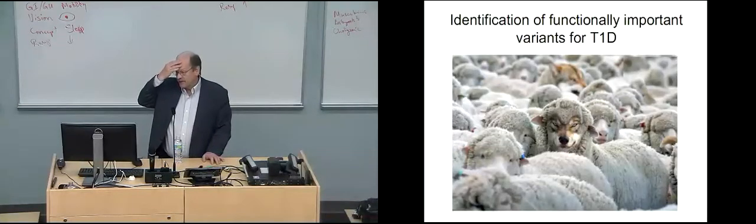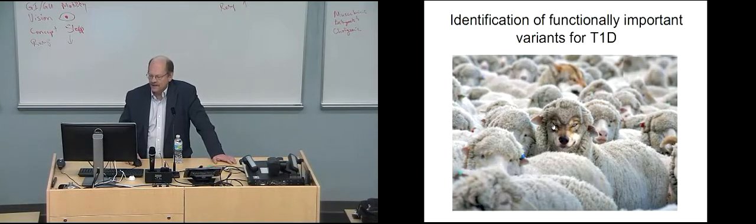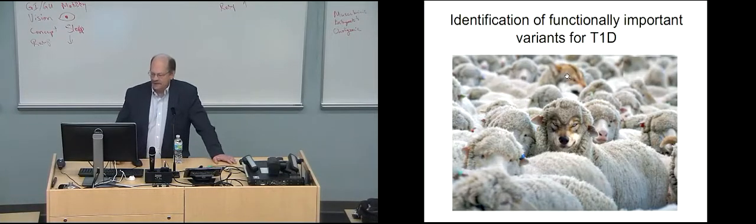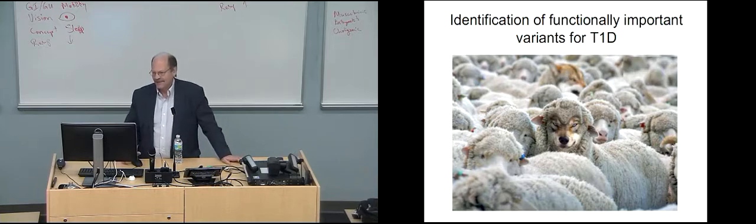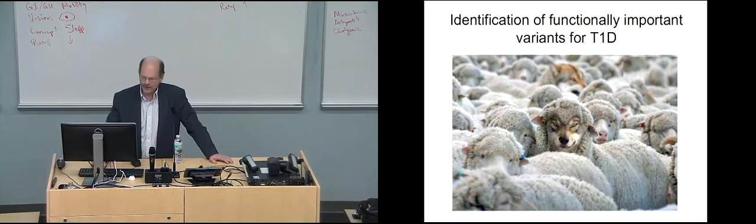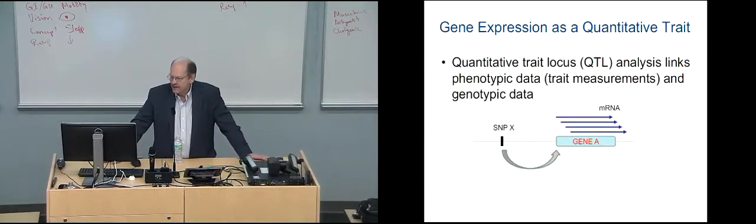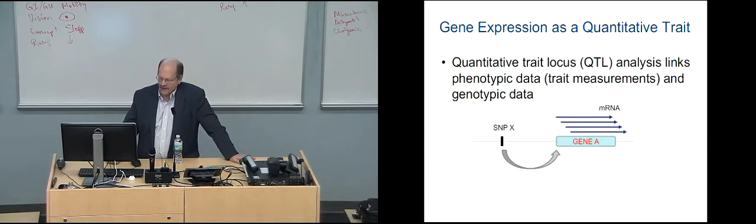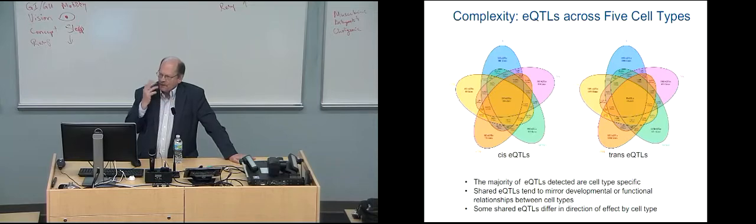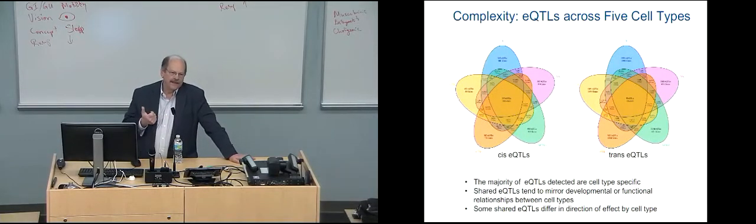So how does one identify functionally important variants for type 1 diabetes? I think it's hard to figure out what these variants do. There's also another wolf back here, if you really think there might be two functional variants that affect disease. A lot of this, what we've started doing, is looking at gene expression as a first step. Gene expression you can think of as a quantitative trait. You look at the expression either through arrays or what we typically do is RNA sequencing. And you have a SNP, and you use the expression profile as the outcome. And you can determine what the eQTL is.